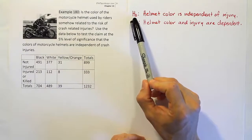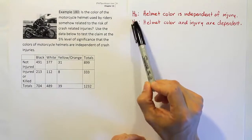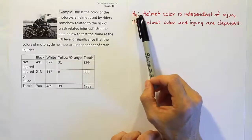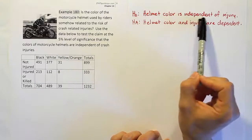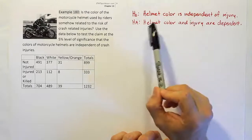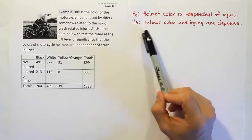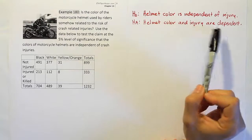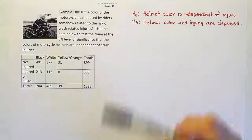I'm going to express the two hypotheses that are standard with the chi-squared test of independence. The null hypothesis always says the two categories are independent. So helmet color is independent of injury, versus the alternative, which is helmet color and injury are dependent, or in other words, related in some way.